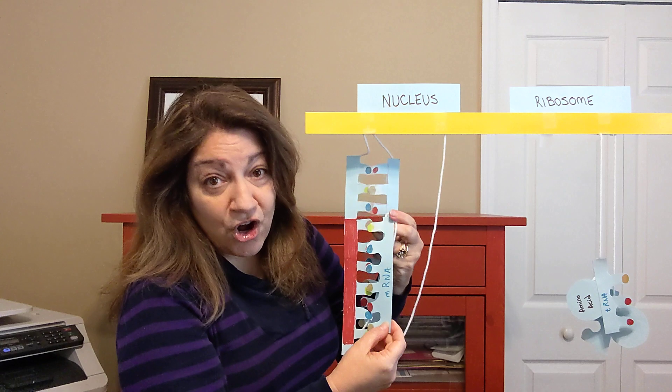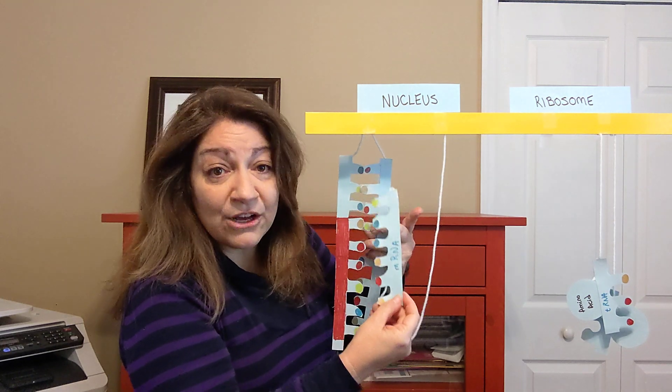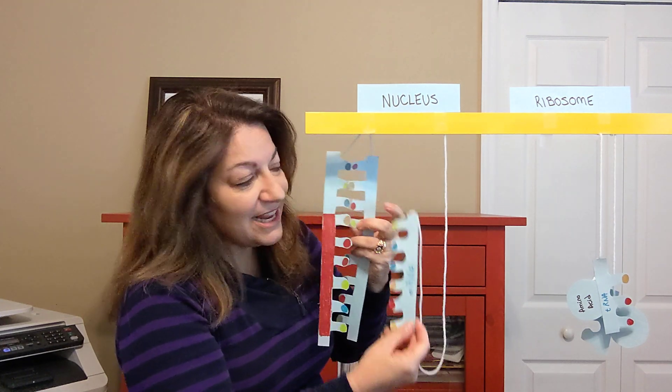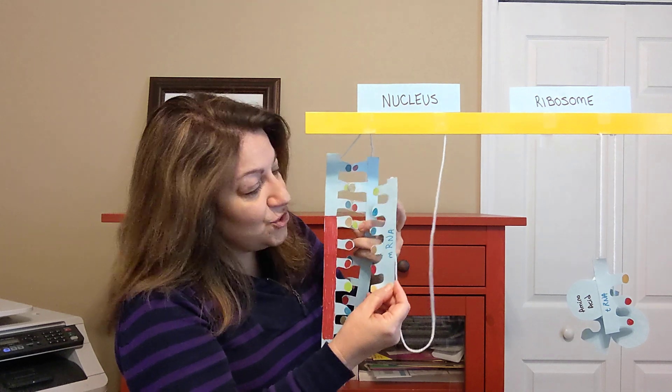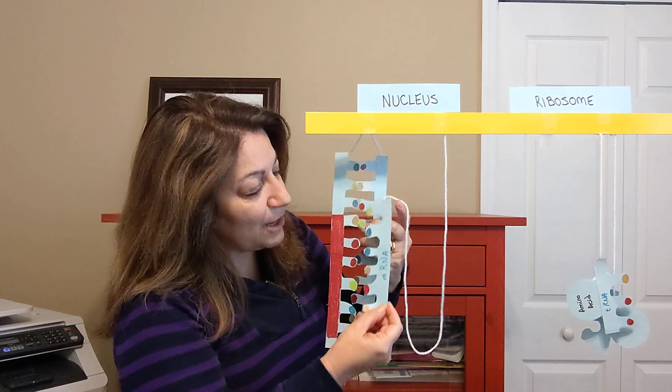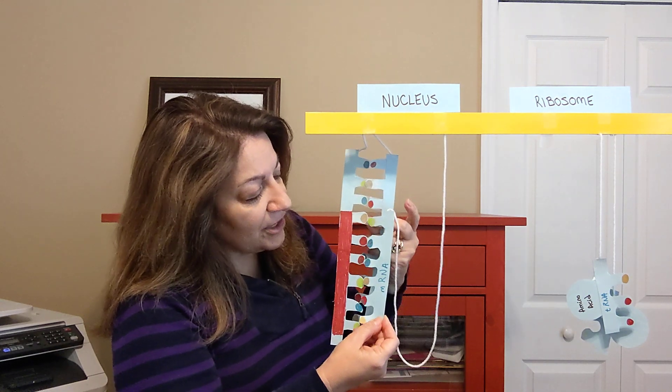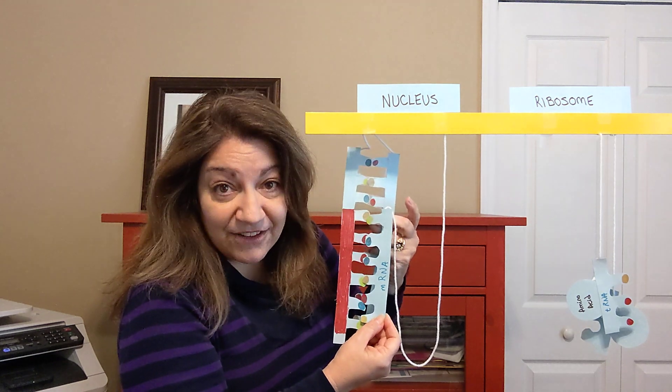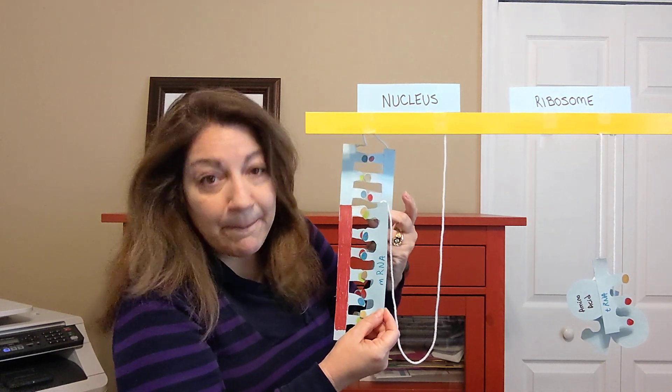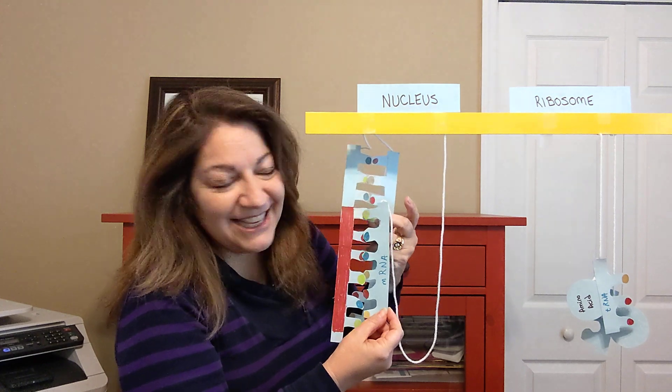mRNA stands for messenger RNA. RNA is a single strand, not a double strand, a single strand of these nucleotide bases with a single backbone. And so, messenger RNA comes in and makes that negative. It's copying the opposite of what the DNA code is.